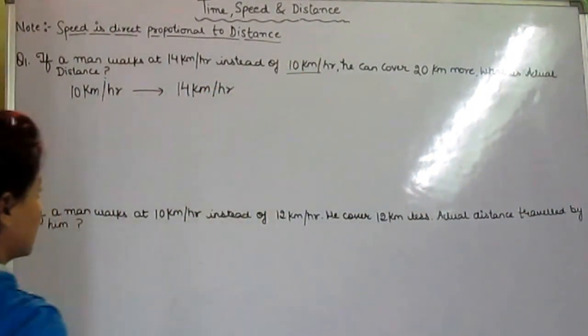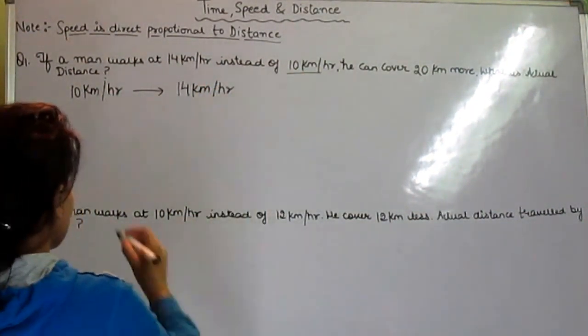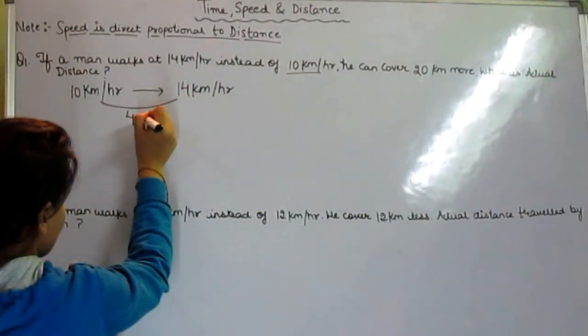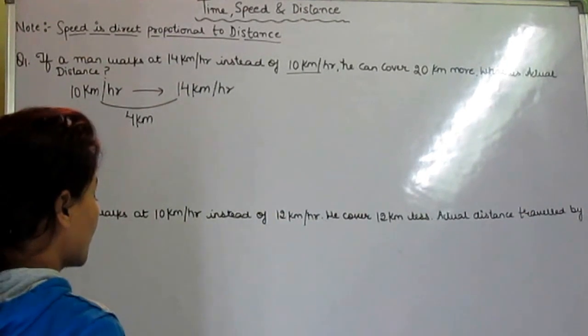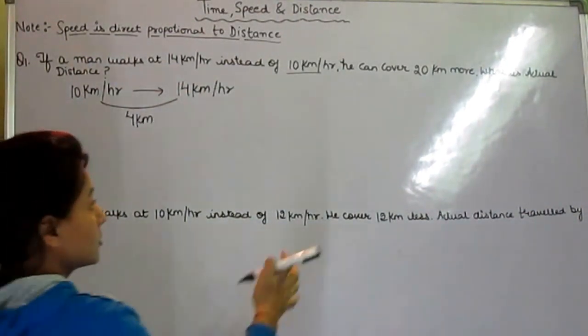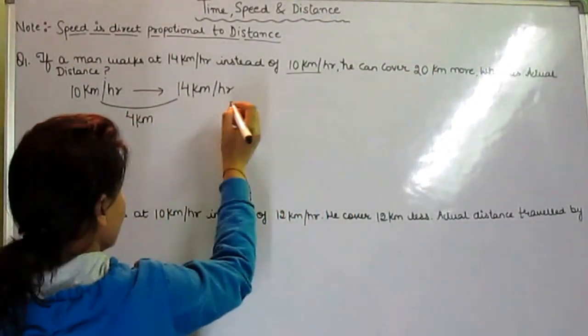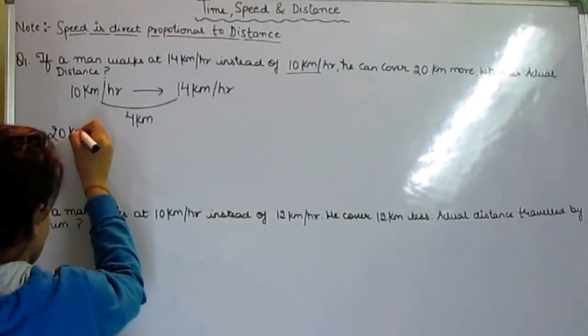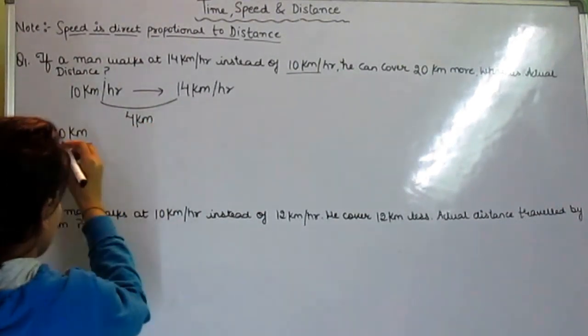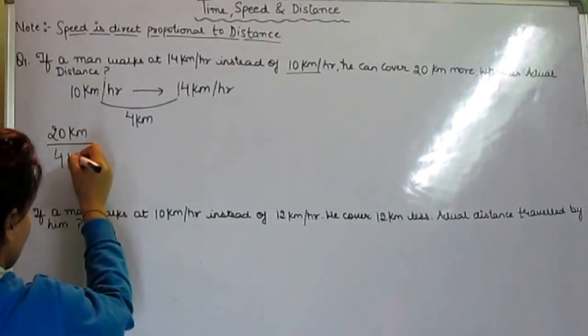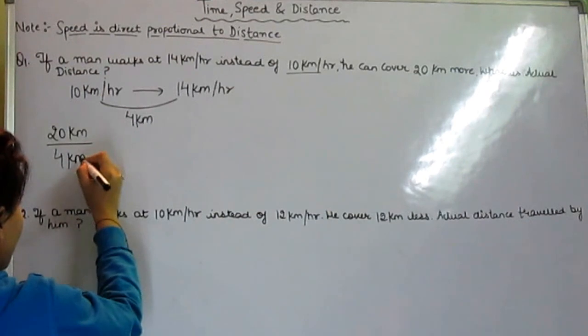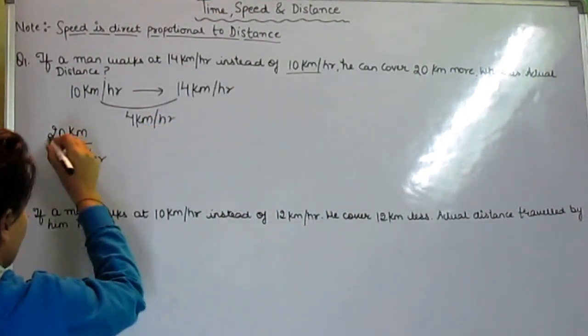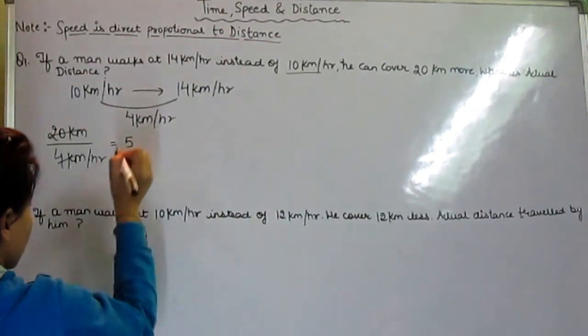What is the gap? The gap is 4 km per hour. How much are we given? We are given 20 km. 20 km divided by 4 km per hour, this is 5.